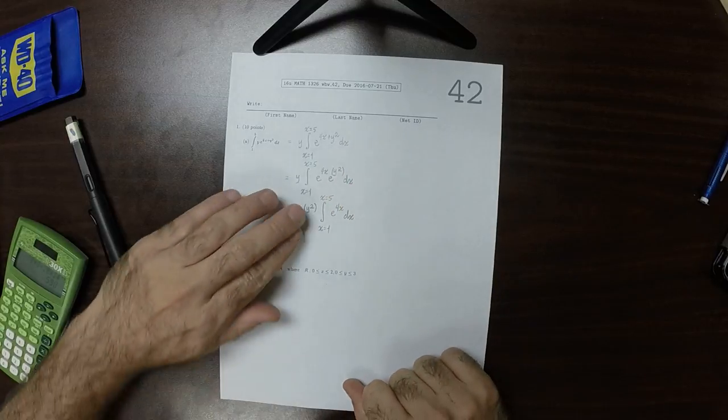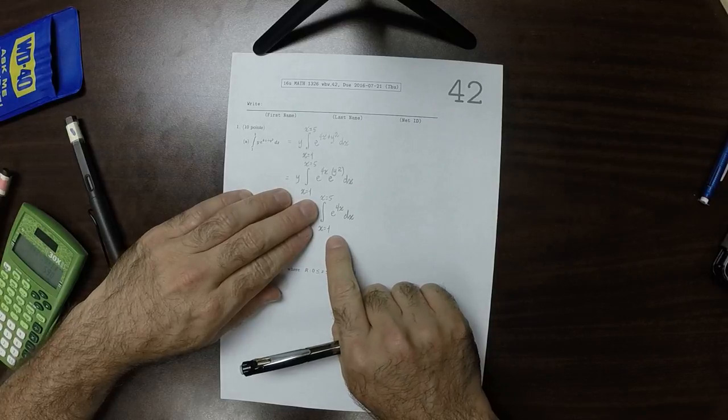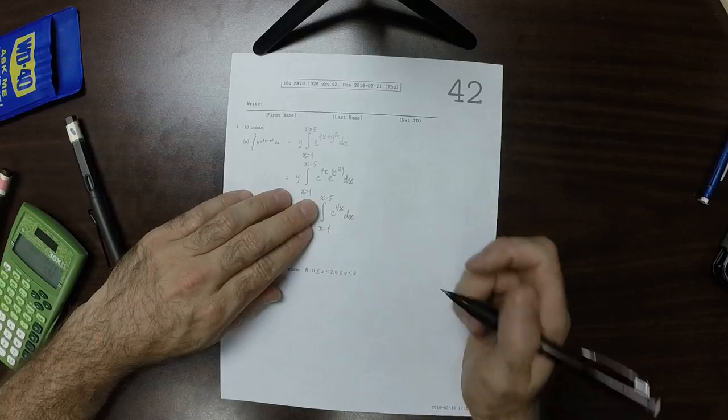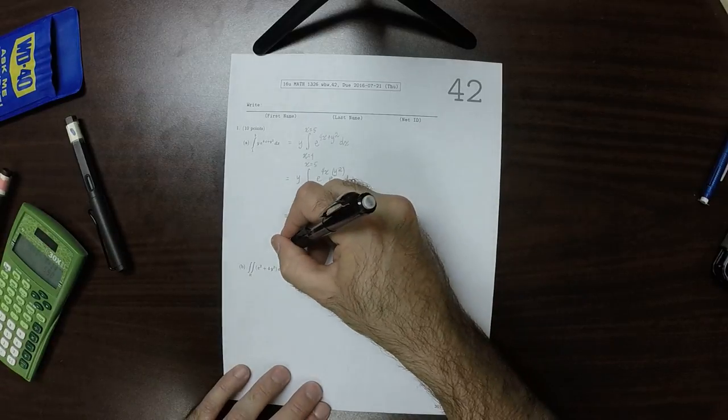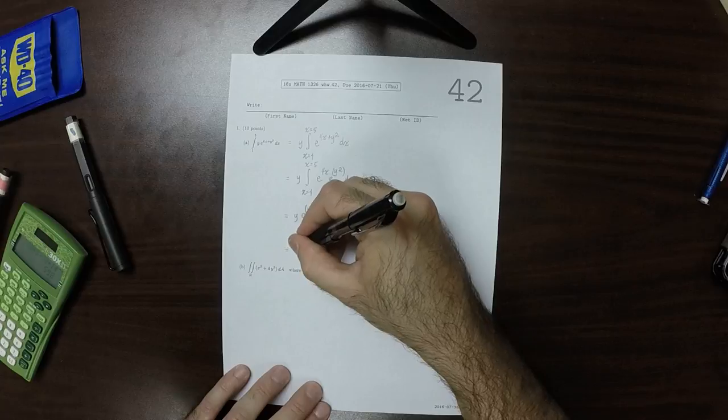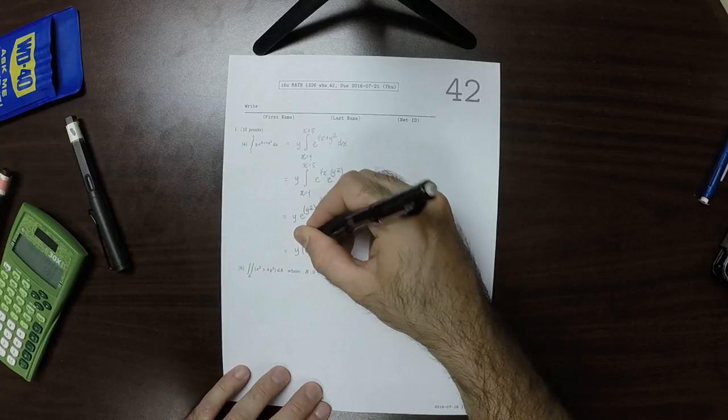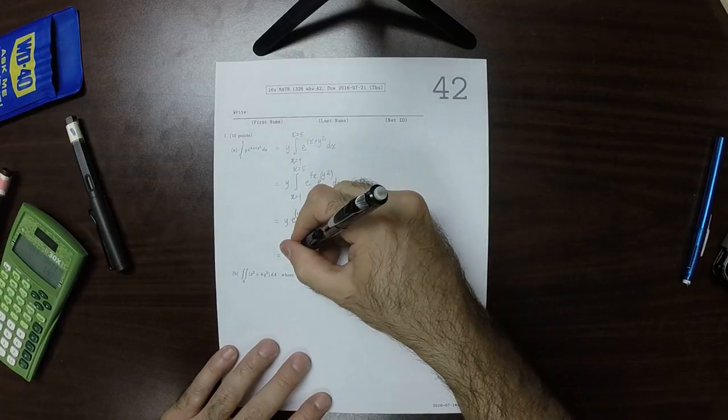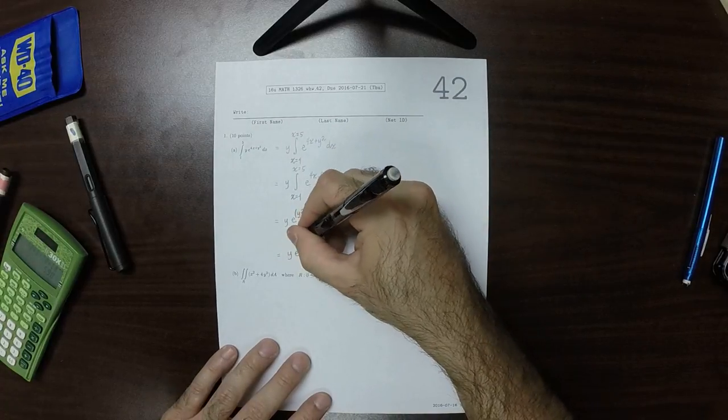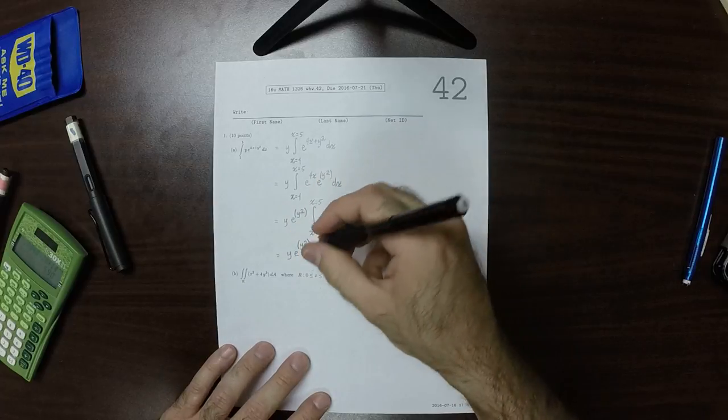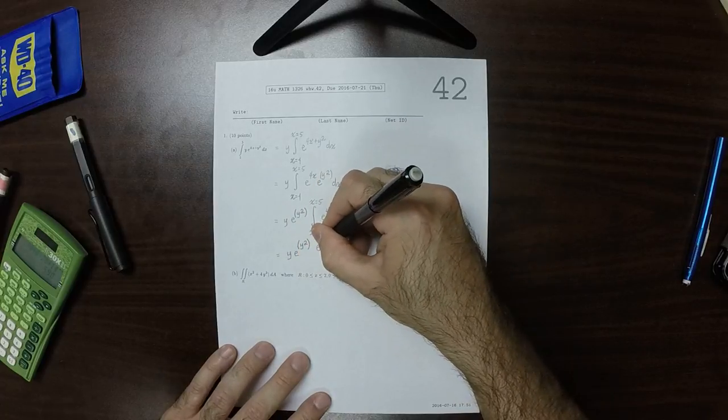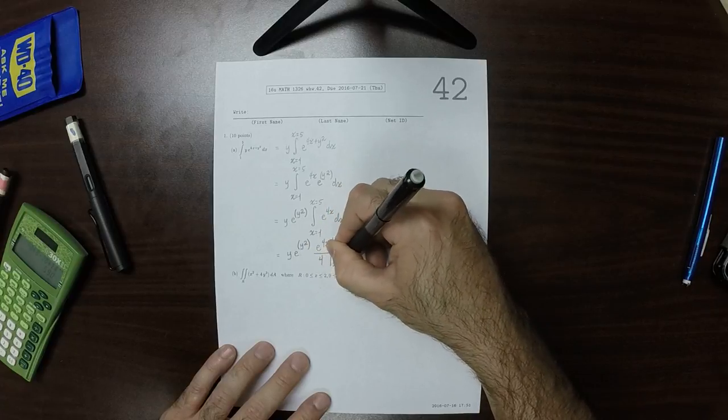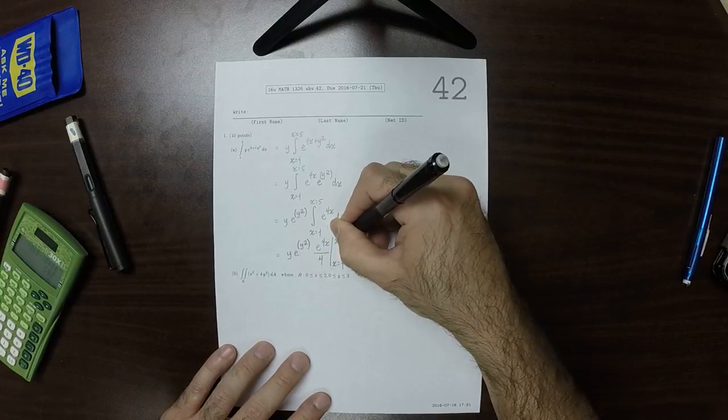And now, this integral, we can use the fundamental theorem because the corresponding antiderivative is one of the antiderivatives that we know. So, this would be y, exponential y squared, and then e to 4x, divide by 4, evaluated from x is 1 to x is 5.